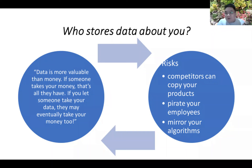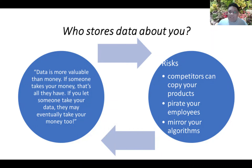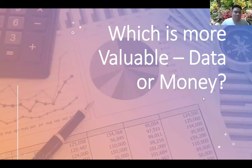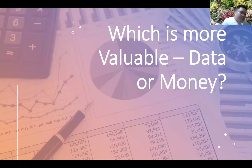Data is considered to be more valuable than money. If someone has your money, that's all they have — but if people have your data, they may eventually take your money too. With your data, people can pretend to be you, take your relationships, take your social media, take your money, and take your intellectual property. That's why when looking at your social media, be careful about posting your email, complete birthday, and complete address — because these are personal identifiers.